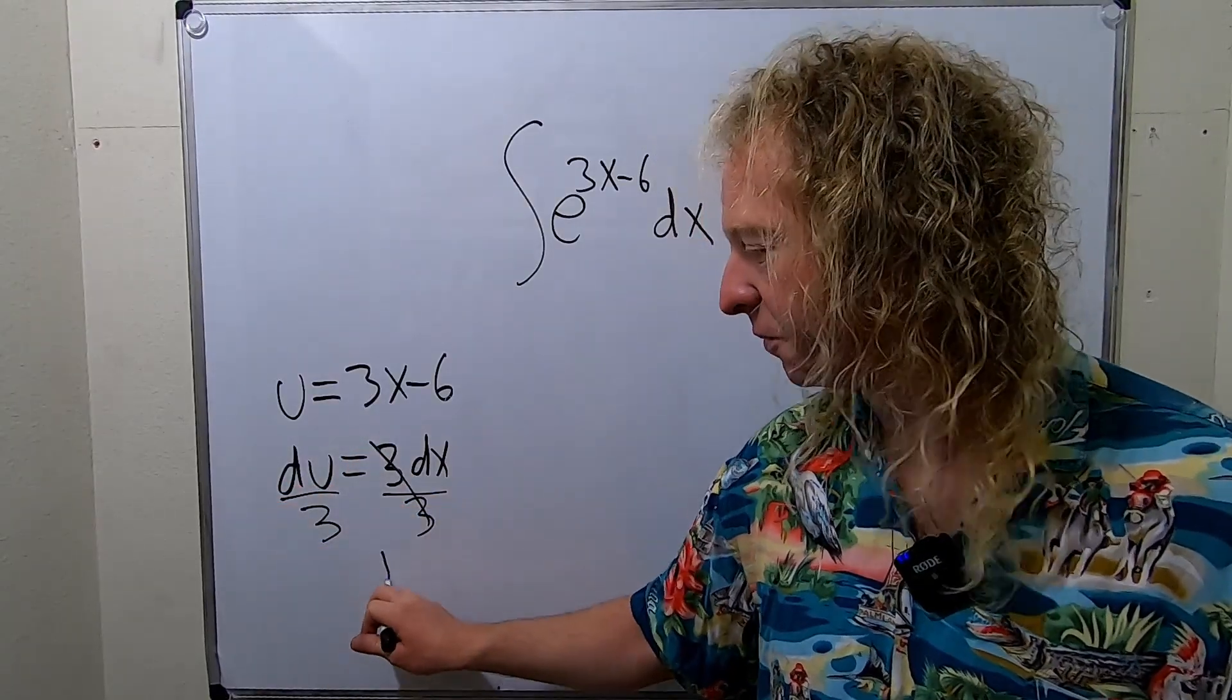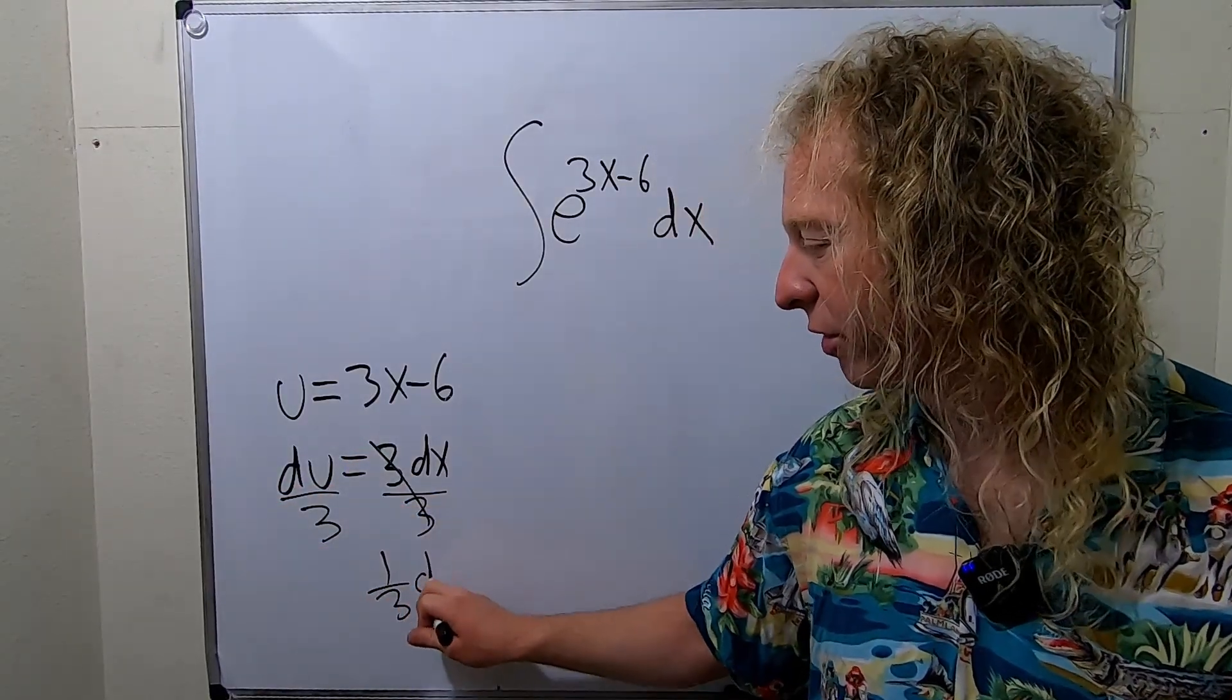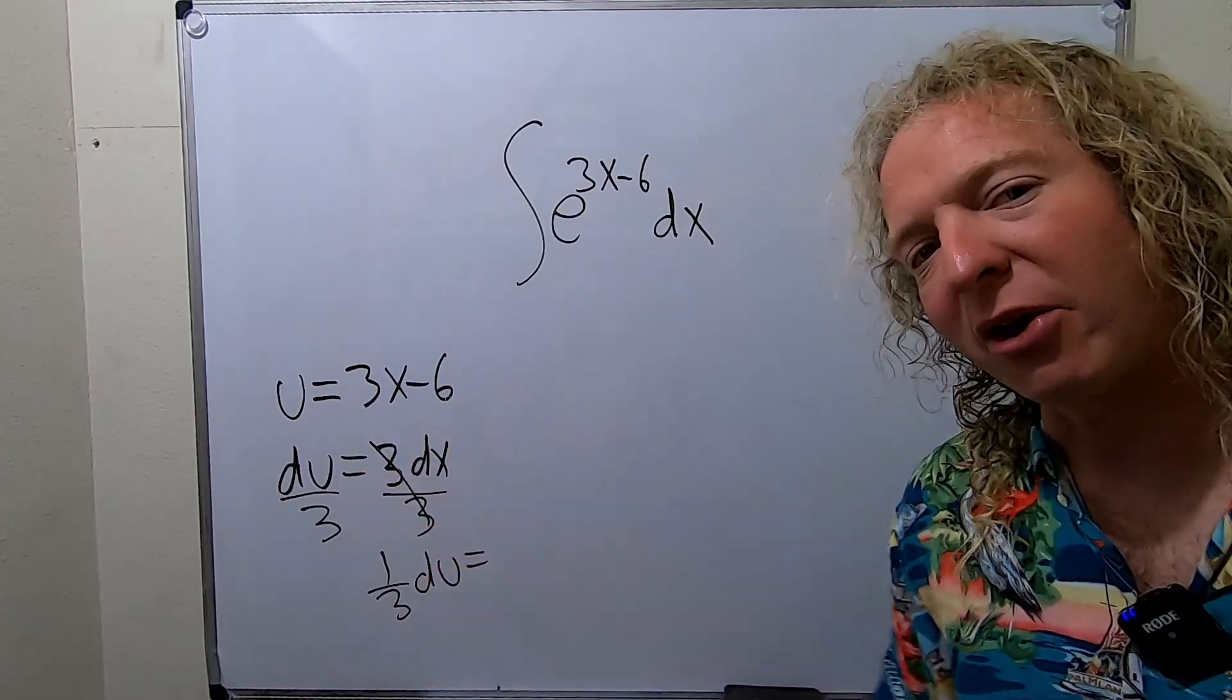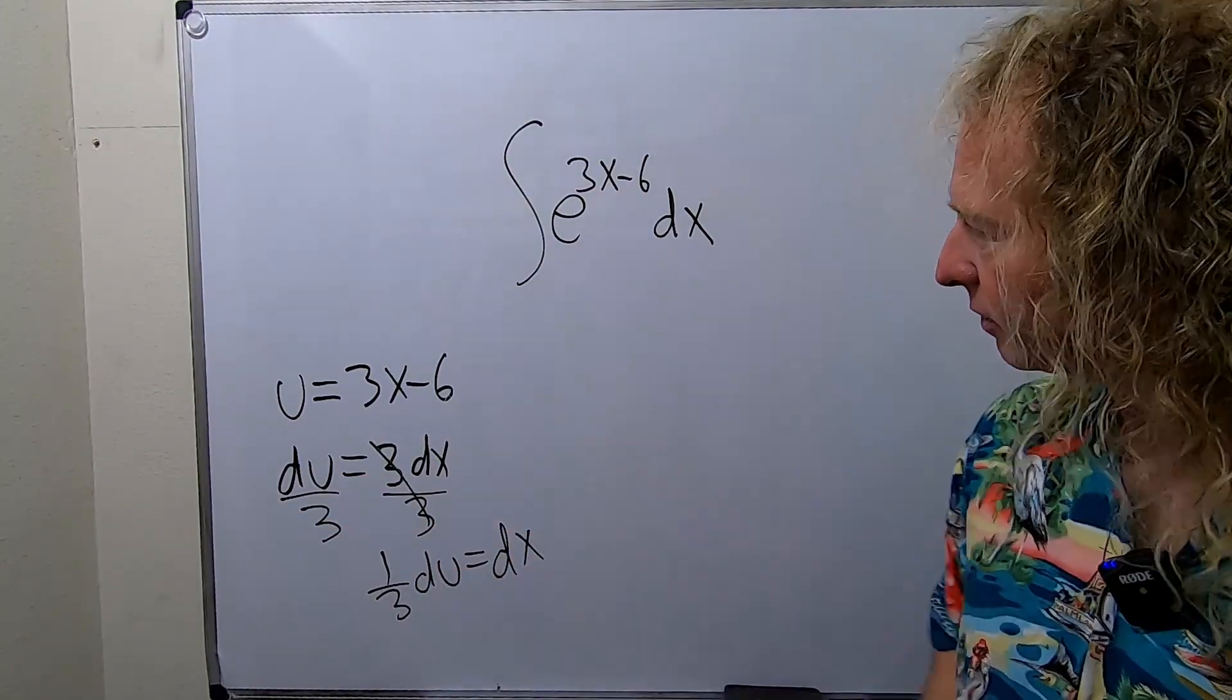So we have 1 third du. Notice I'm writing it as 1 third. That's because we're going to pull it out in the next step. This is dx.